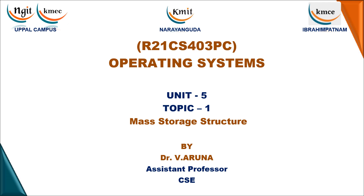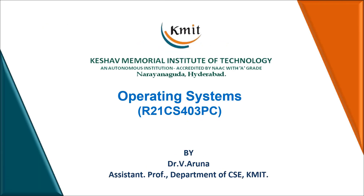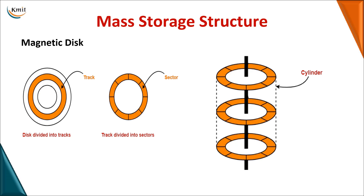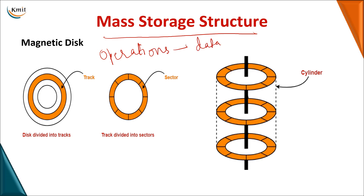Good morning. The next topic we will be dealing with in today's operating system class is related to mass storage structure, and this will be covered in unit 5. When you want an operation to be performed on a computer, you require the necessary data to be stored on your system. For storage, you can have either your primary memory or you can go for your secondary storage.